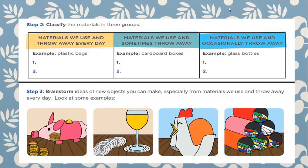The third group is materials we use and occasionally throw away — for example, glass bottles. Maybe in our house we celebrate a birthday, and the adults drink beer or wine. It's possible that we can recycle those glass bottles.